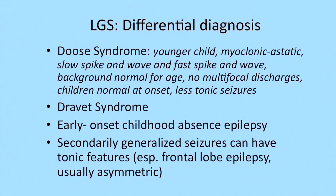When you diagnose a child with Lennox-Gastaut syndrome, it is important to think about differential diagnoses. Doose syndrome or myoclonic-astatic epilepsy is one important differential — these kids have multiple seizure types, but tonic seizures are not prominent, they are typically younger, more likely normal cognitively at diagnosis, and have better prognosis. Other syndromes to consider include Dravet syndrome, early myoclonic or infantile myoclonic epilepsy, early onset absence epilepsy, and frontal lobe epilepsy, where tonic seizures are frequently asymmetric.